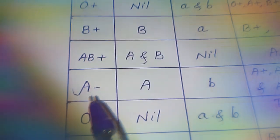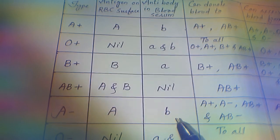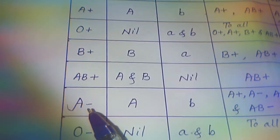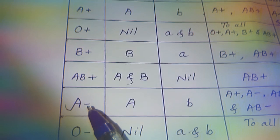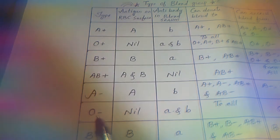For A negative blood group, antigen A is present on the RBC surface and antibody B is in the blood serum. The negative sign shows the absence of antigen D, meaning the Rh factor is absent. An A negative person can donate blood to A positive, A negative, AB positive, and AB negative persons, and can receive blood from A negative and O negative persons.